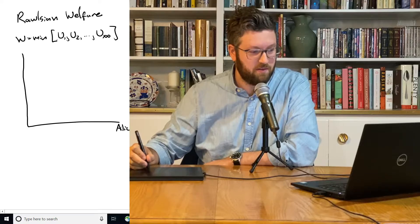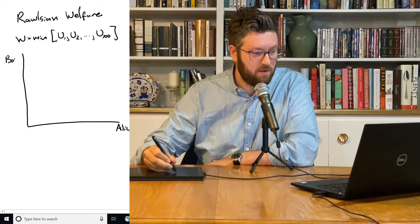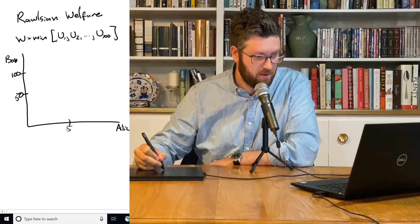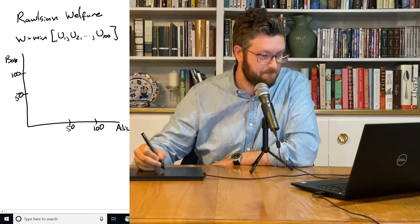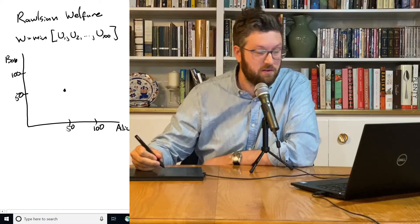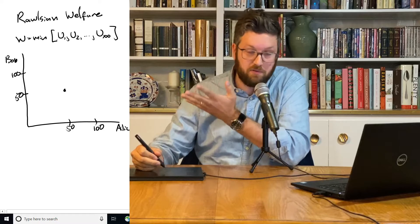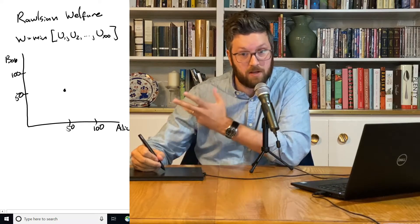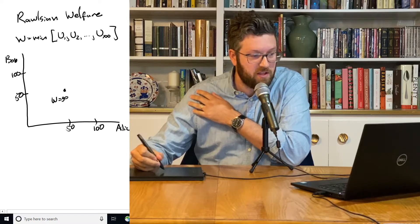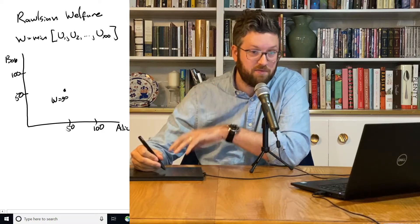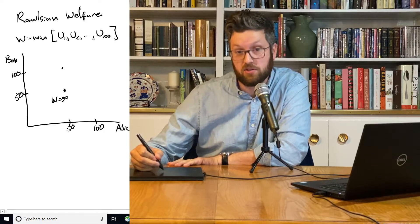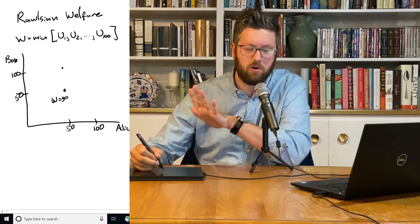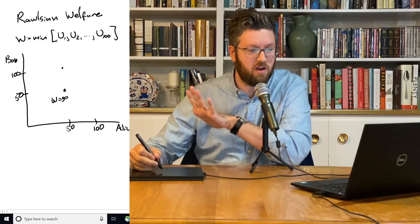If here's Alice and here's Bob and here's 100, 50, 50 and 100. Well, if they're both at 50, then the utility is 50 because the minimum of two 50s is 50. If Bob has more, so this is welfare 50, if Bob ends up getting better off, so he goes up to 100, but Alice is just as worse off, that doesn't count for anything. We're still at welfare 50 because in this framework, we only care about who's worst off in society.